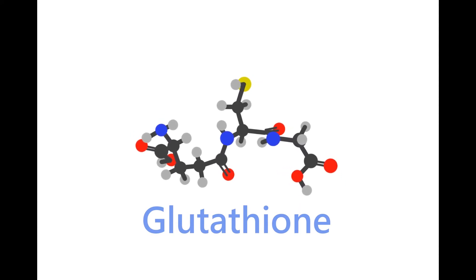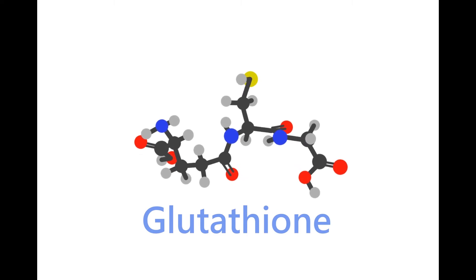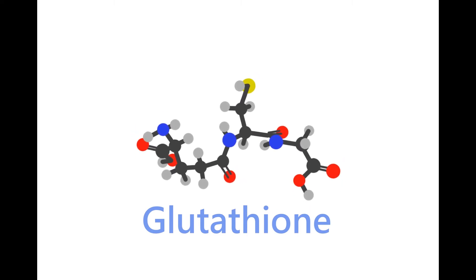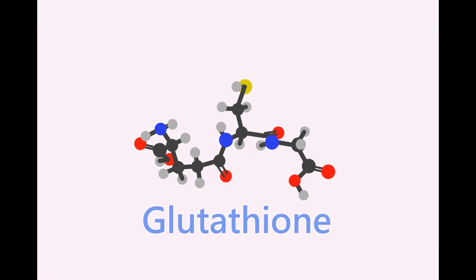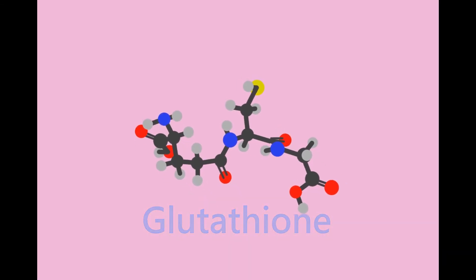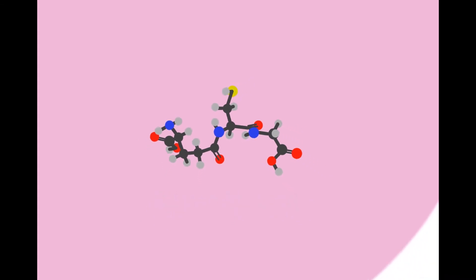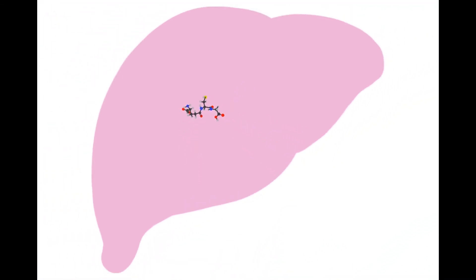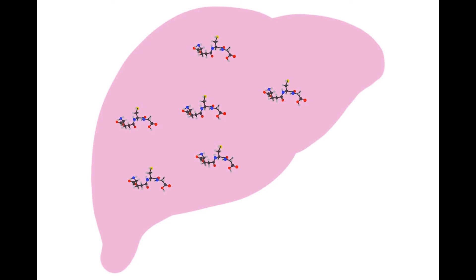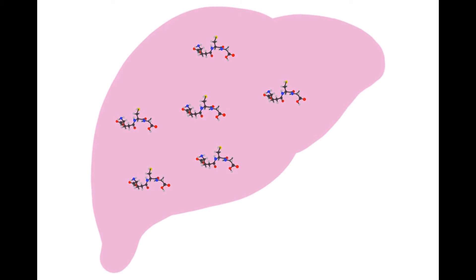Naturally occurring and produced within you, it is found in highest concentrations in your liver. This is because your liver is responsible for the production of mitochondrial GSH. Your liver is your body's main detoxification organ, as well as enzyme producer and transportation hub for your blood supply.